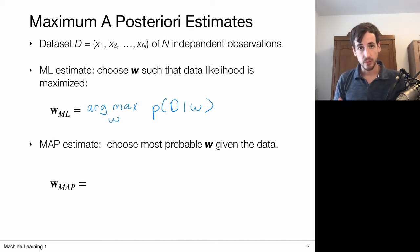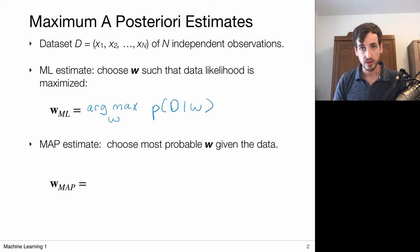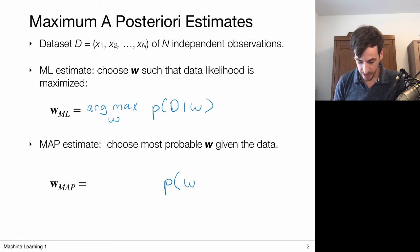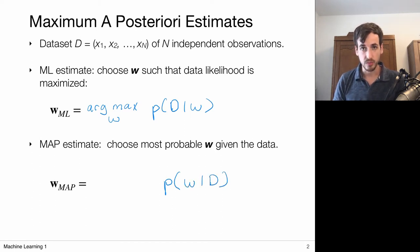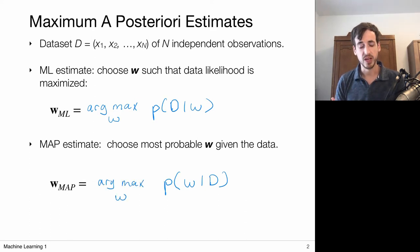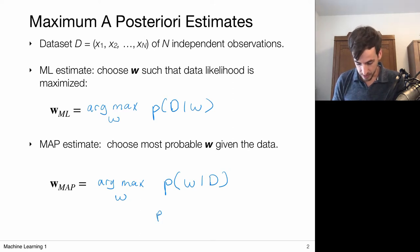Now in the maximum a posteriori case we are going to optimize the posterior of the weights given my data. So now we look at the distribution for the weights given my data and maximize this — we maximize the posterior probabilities, because this distribution is called the posterior.